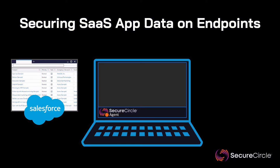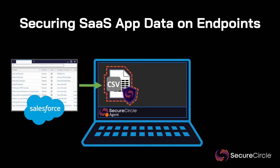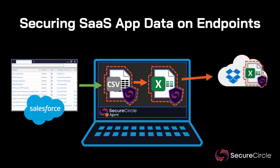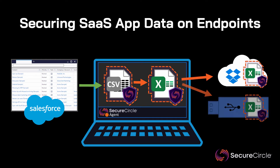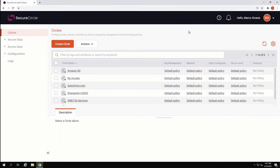In this demo, you will see how Secure Circle can be configured to automatically protect data coming out of SaaS applications such as Salesforce, and protect data persistently even when protected data is moved to cloud storage services or removable media. With Secure Circle, securing SaaS data is simple.